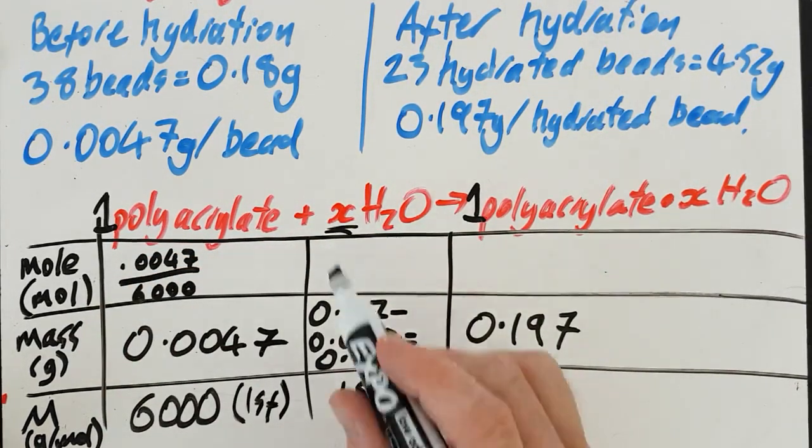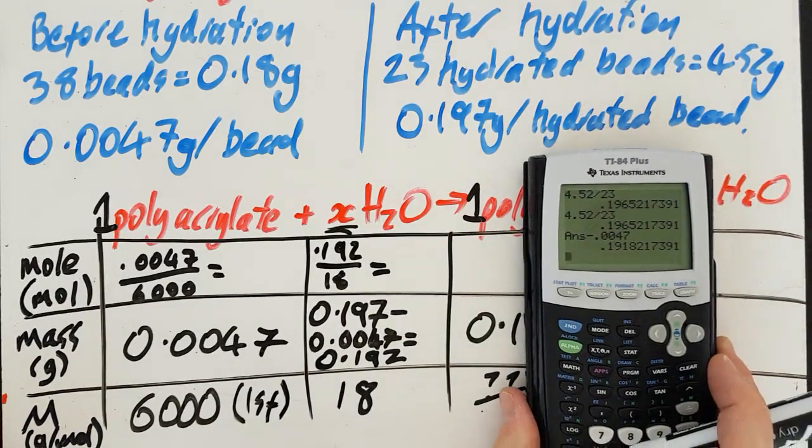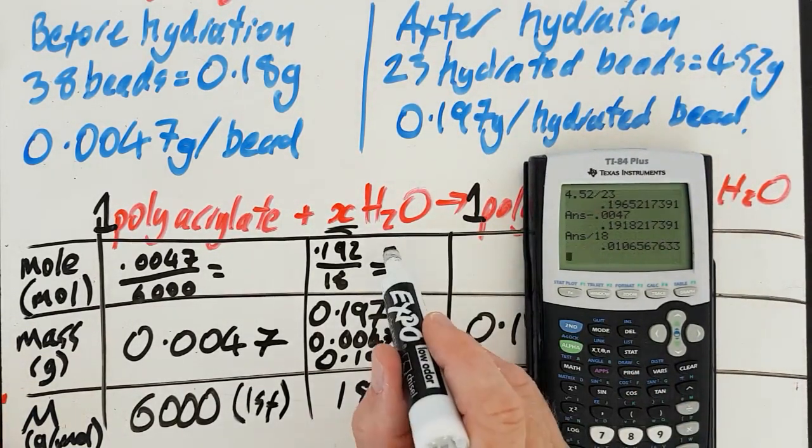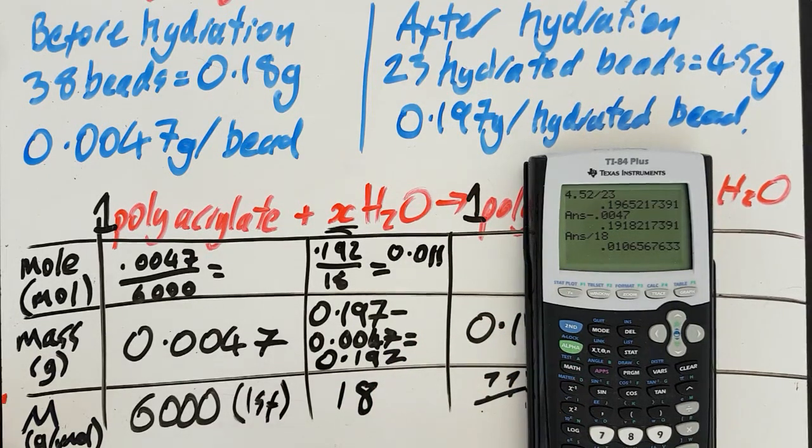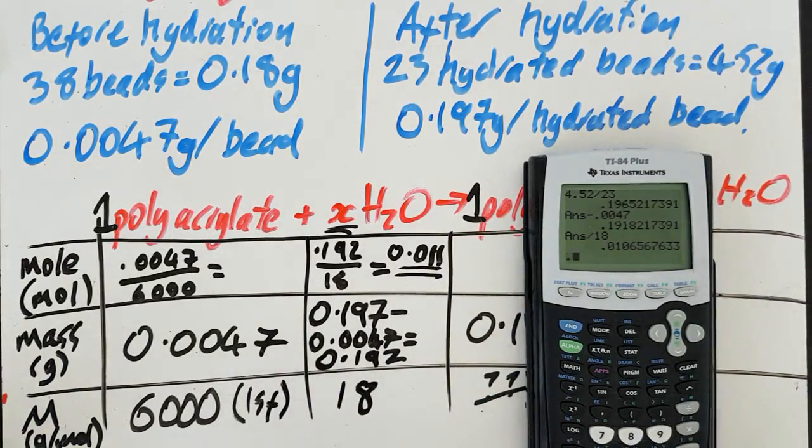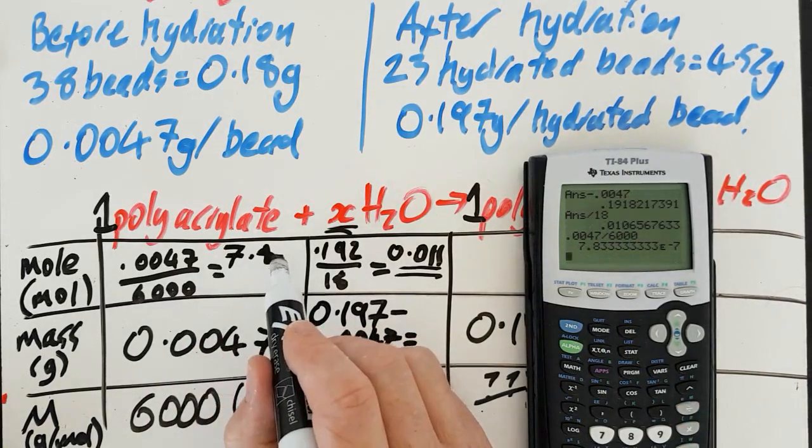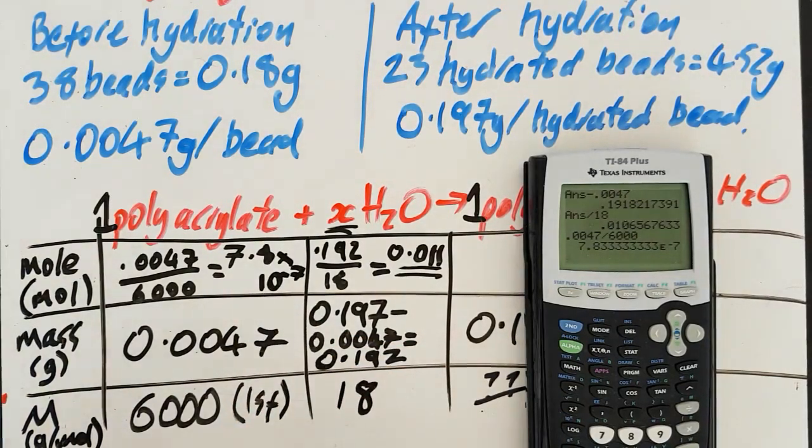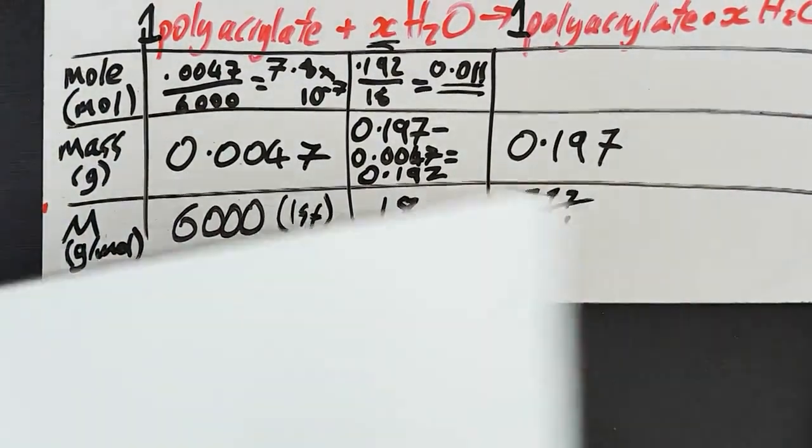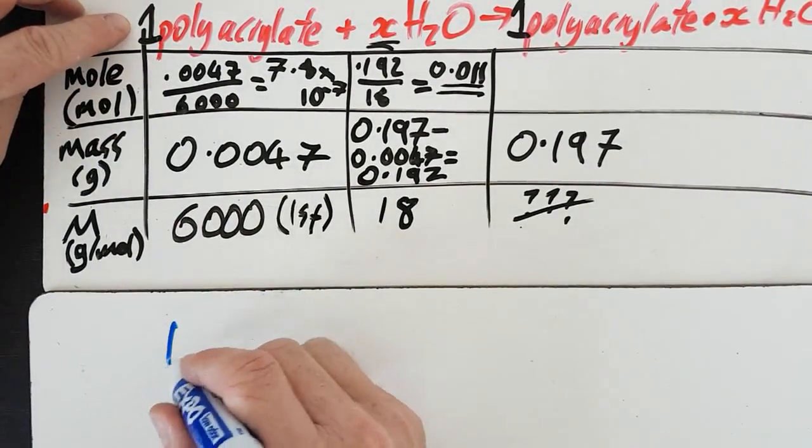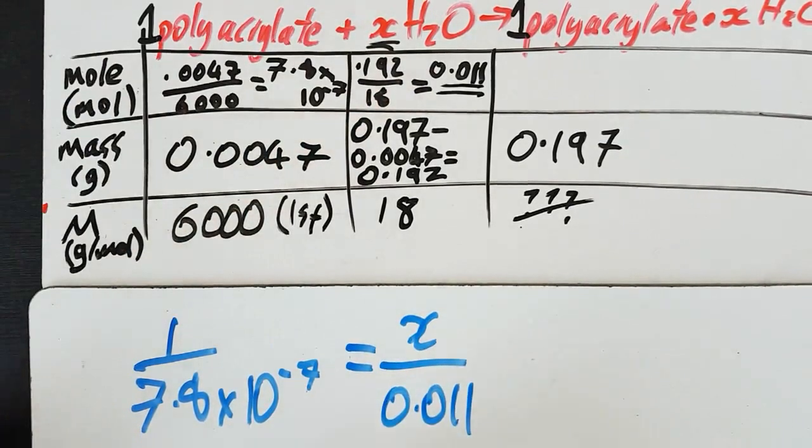So moles is mass over molar mass. Let me work out those two molar values. 7.8 times 10 to the minus 7 moles. And then it's just simple cross multiplication. So 1 over 7.8 times 10 to the minus 7 equals X over 0.011. Solve for X.